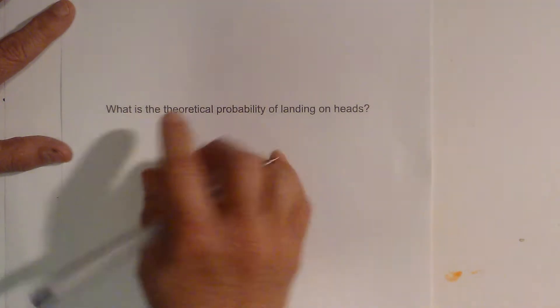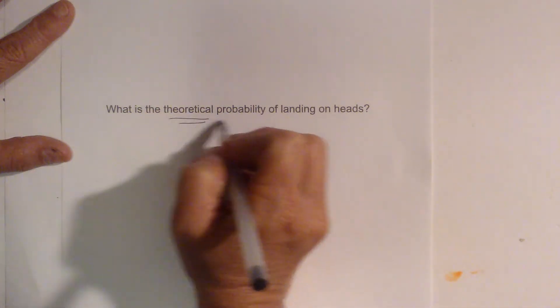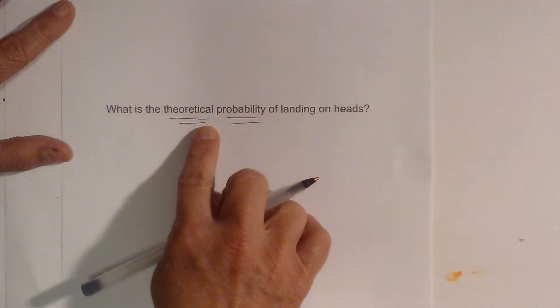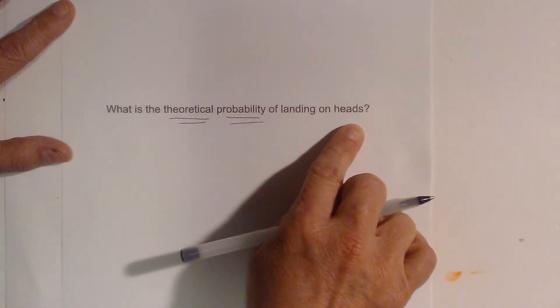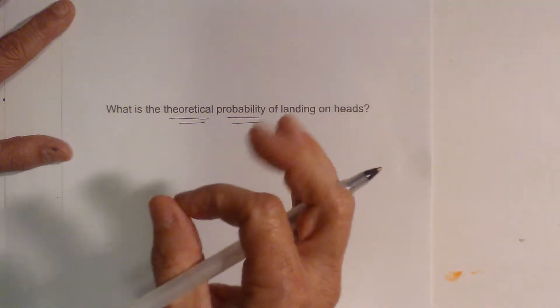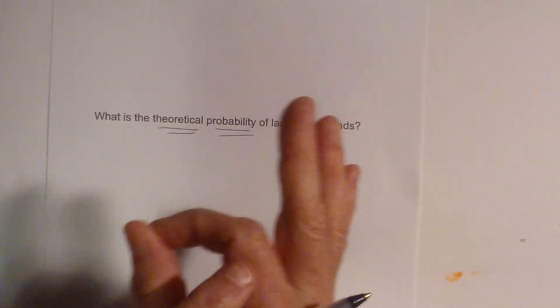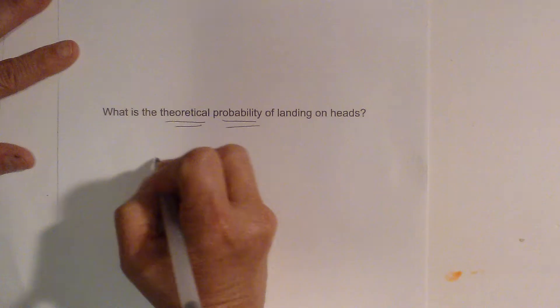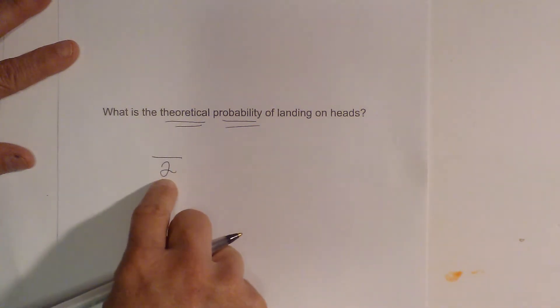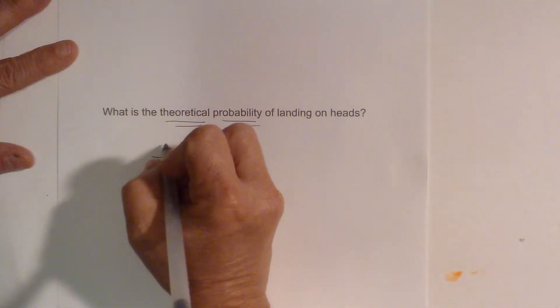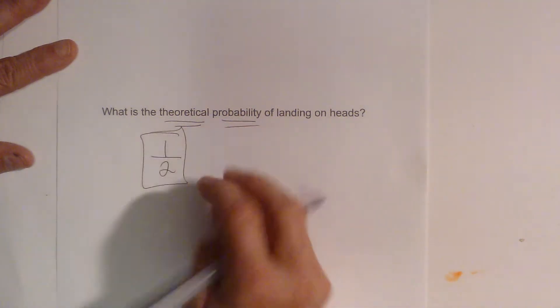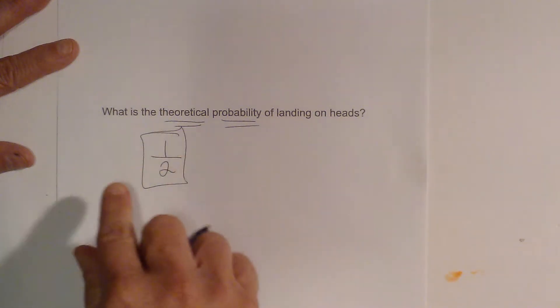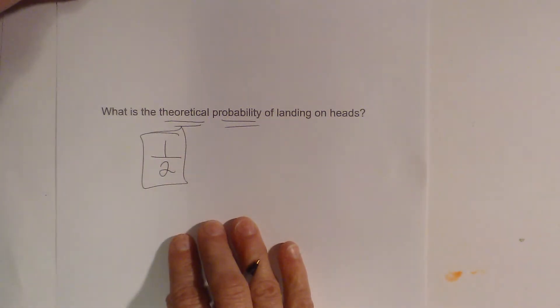Now let's look at the concept of theoretical probability. What is the theoretical probability of landing on heads? Let's say we don't do the experiment. We just have a coin — on one side we have a head, and on the other side we have a tail. We have two possible outcomes, so that is our denominator — two different choices. The probability of getting heads is one out of two, so it's one half. Because half of the time you should flip a head or a tail. That's what theoretical probability is.